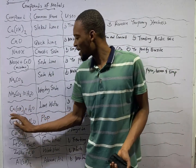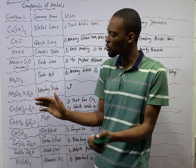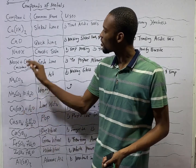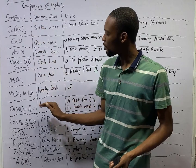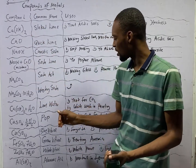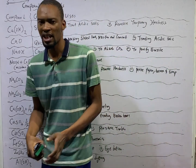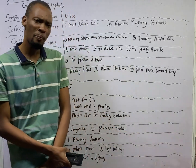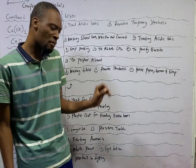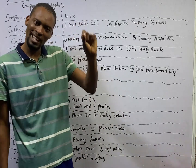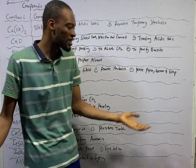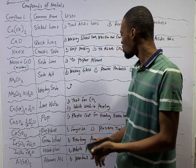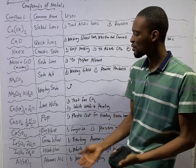When calcium hydroxide is mixed with water, the solution of calcium hydroxide is referred to as lime water. Slaked lime plus water is lime water. And lime water is used to test for carbon dioxide. Lime water is also used as whitewash in painting.